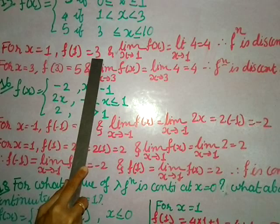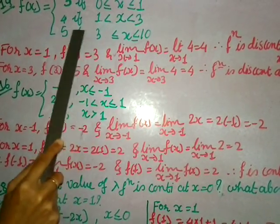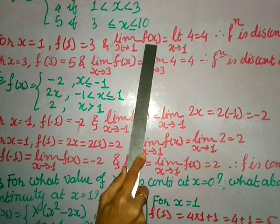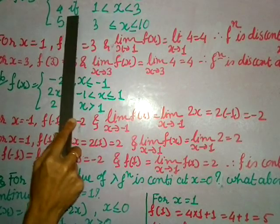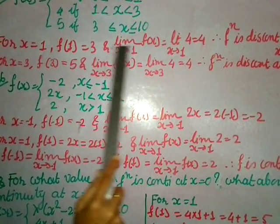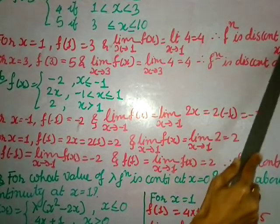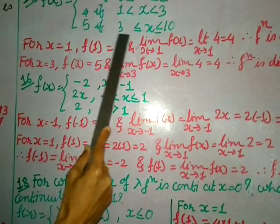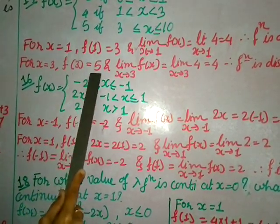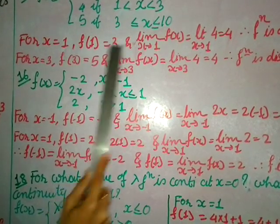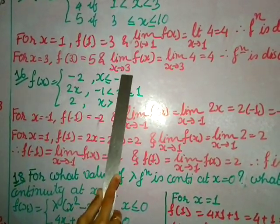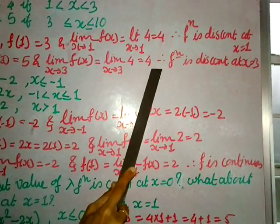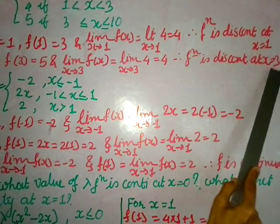For x = 1: f(1) = 3 (first function, no x to substitute). lim(x→1) f(x) = 4 (second function). Since 3 ≠ 4, the function is discontinuous at x = 1. For x = 3: f(3) = 5 (third function). lim(x→3) f(x) = 4 (second function). Since 5 ≠ 4, the function is discontinuous at x = 3.